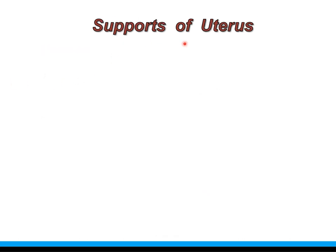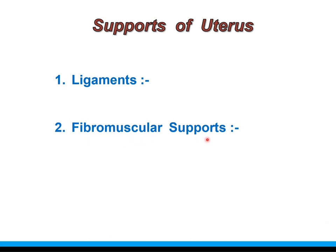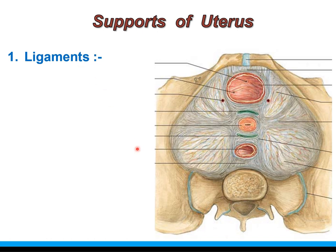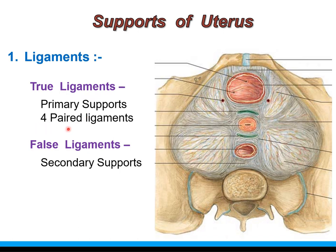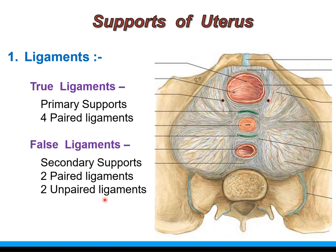The supports of the uterus are classified into ligaments of the uterus, fibromuscular supports, and mechanical supports — all of which maintain the position of the uterus in the pelvic cavity. The ligaments are classified structurally and functionally into true ligaments and false ligaments. True ligaments are composed of fibrous tissue and act as primary supports, while false ligaments are formed by peritoneal folds and act as secondary supports. There are four pairs of true ligaments, two paired false ligaments, and two unpaired false ligaments.